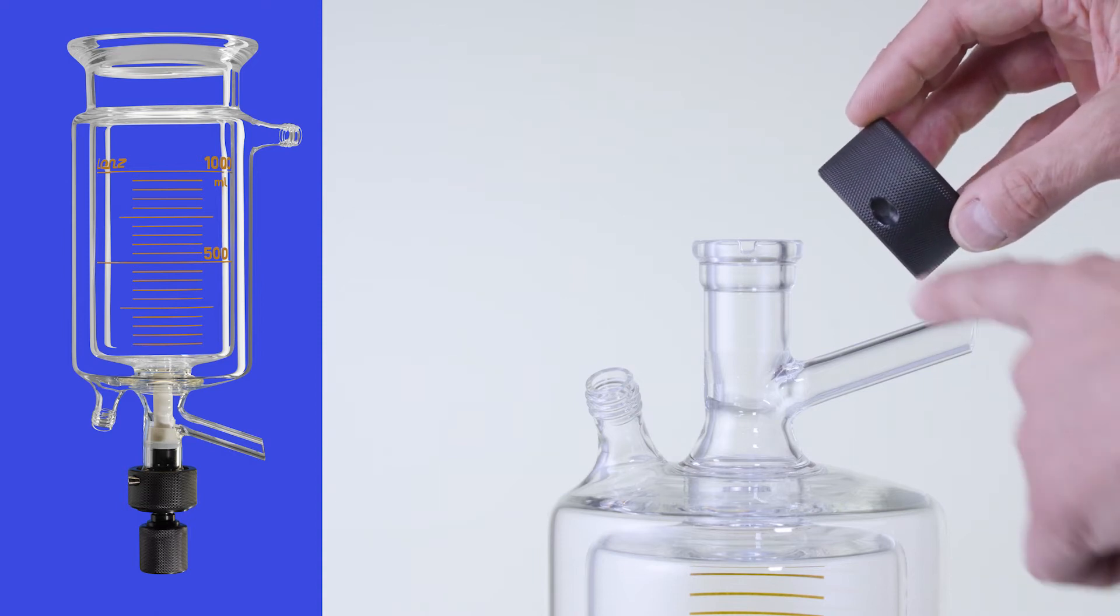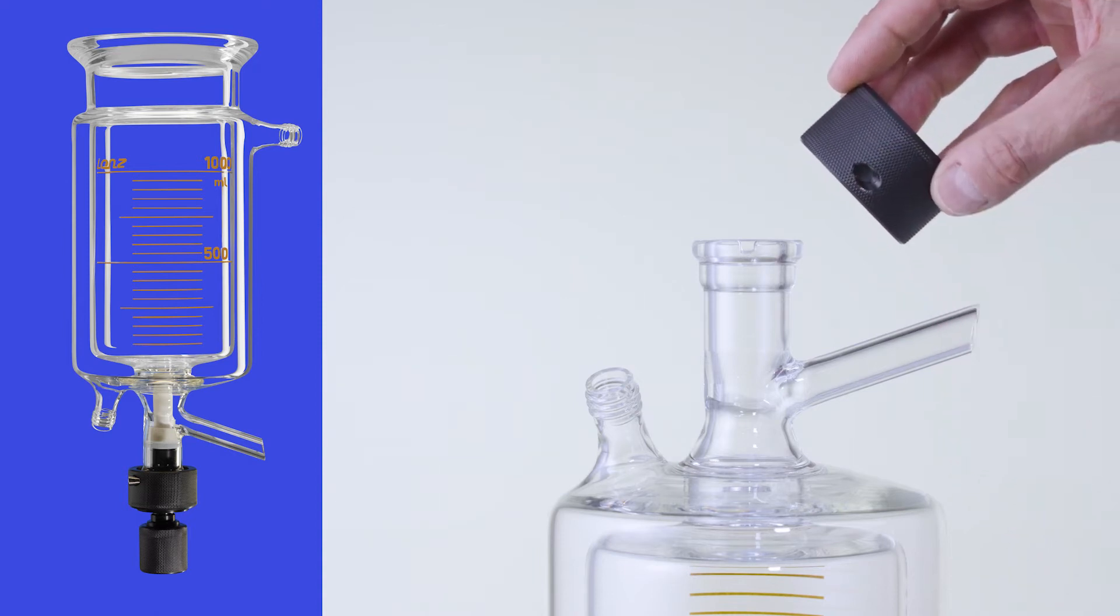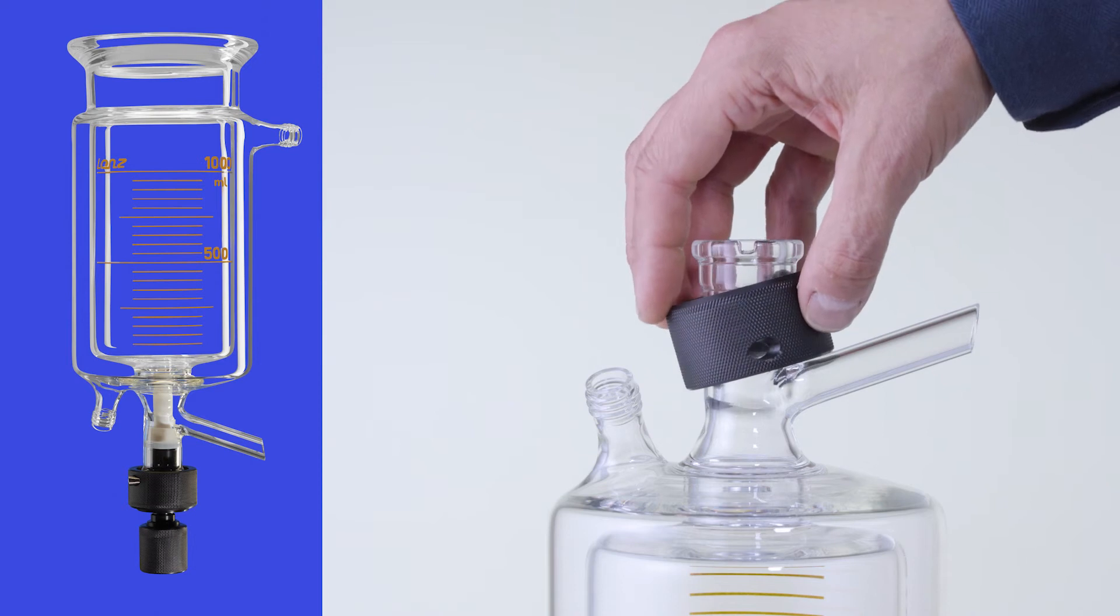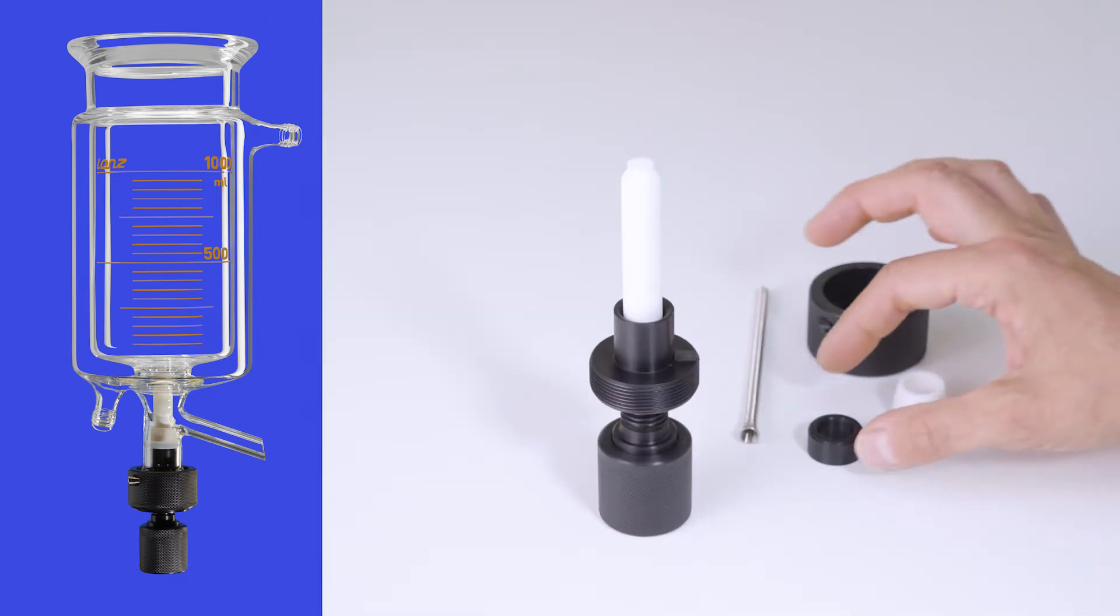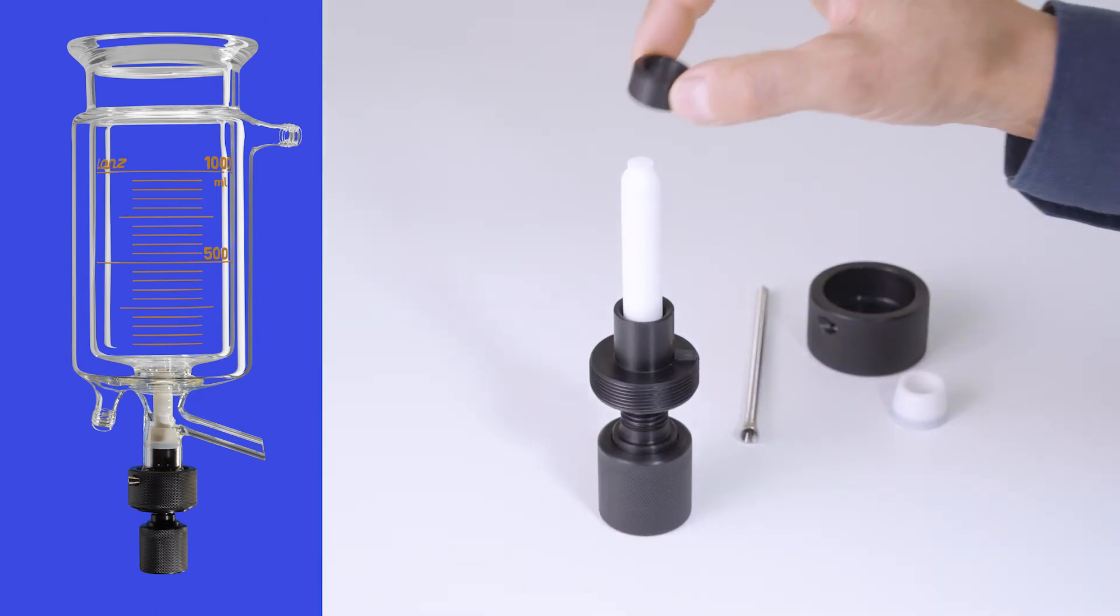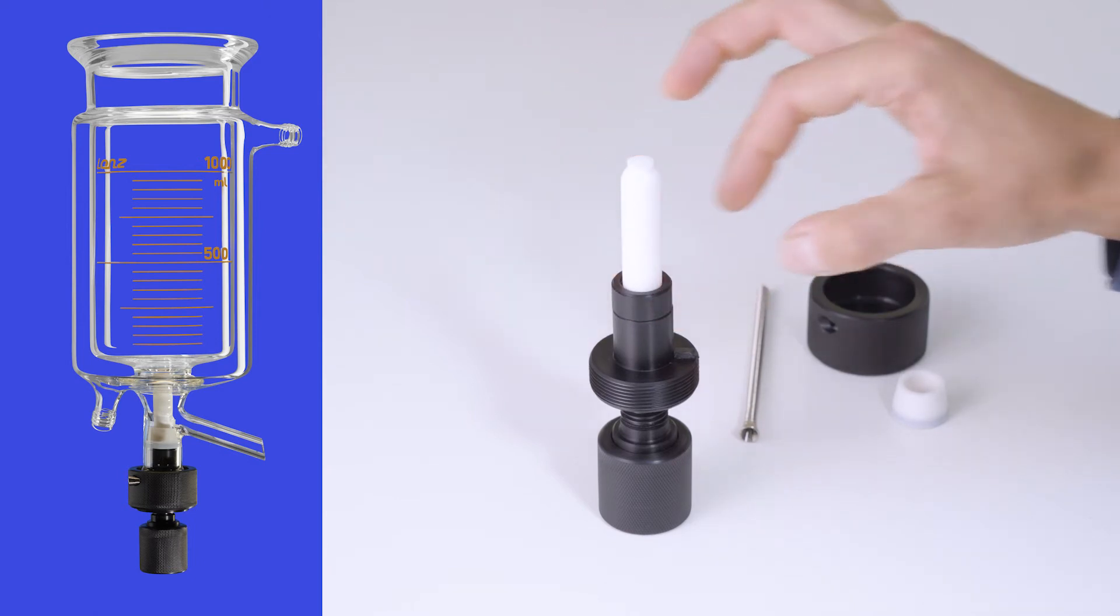Place the connecting nut on the valve's glass part so that the bore on the side points to the reaction vessel. Push the spacer ring and conical seal onto the valve spindle.